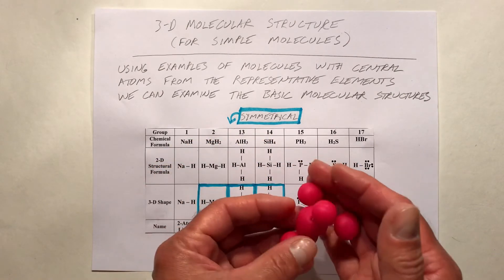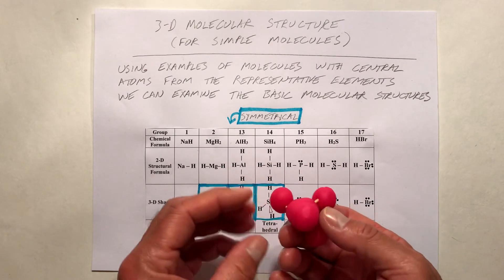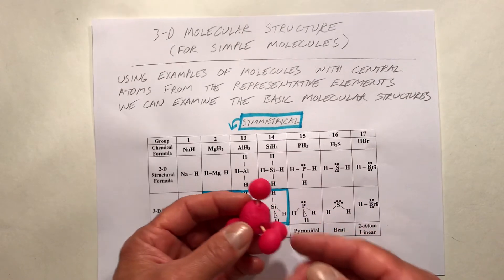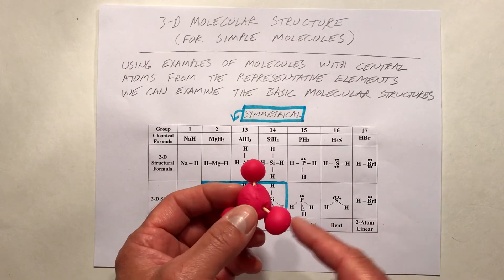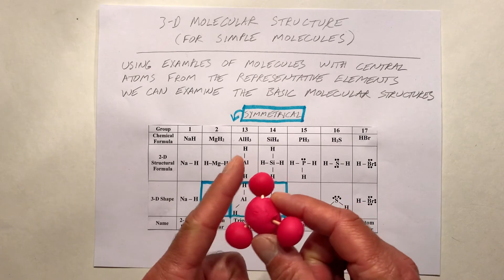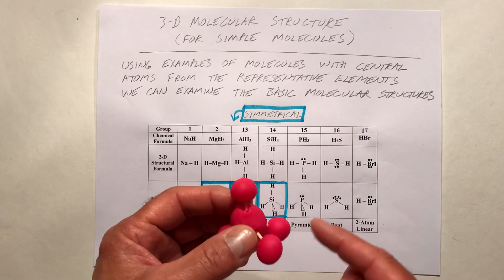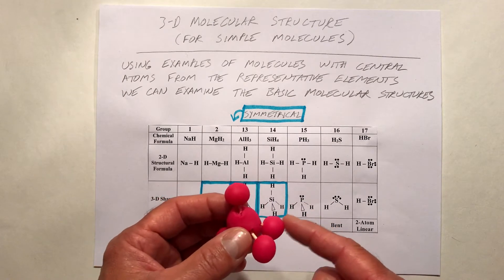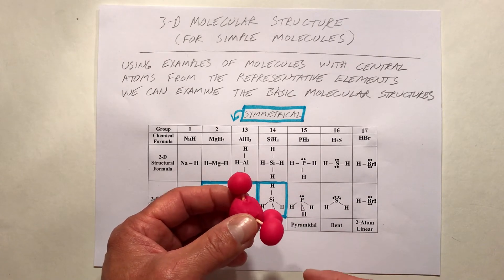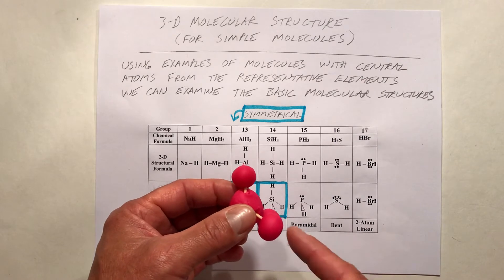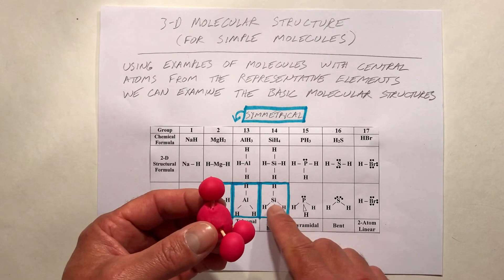Notice that it's symmetrical in every direction. If I put these two bonds in the plane of the paper, then this bond is coming out at us, and this bond is going back away from us. This would be represented with the triangle, and this would be represented with the dashed line.